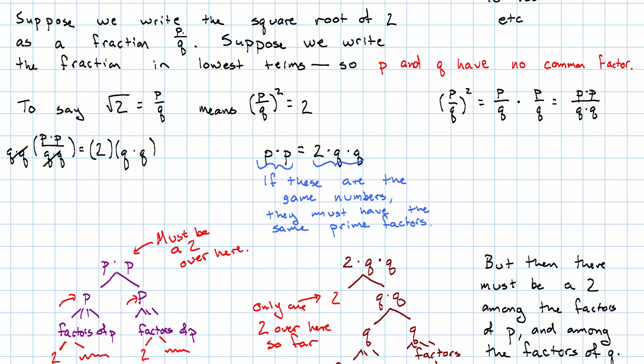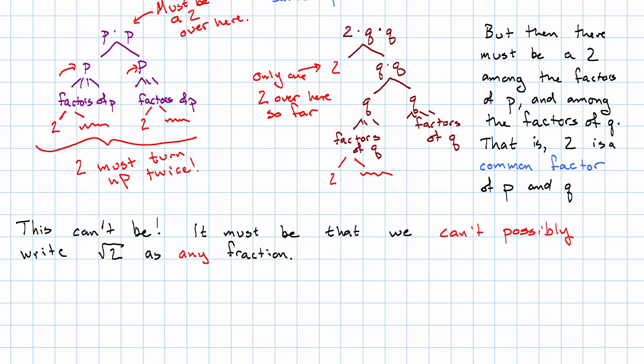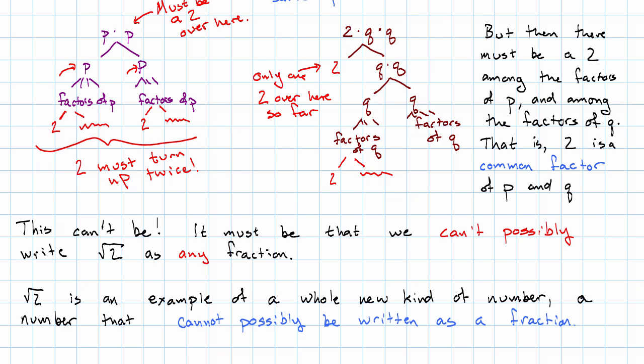But we assumed that p over q was written in lowest terms, so p and q didn't have any factors in common. So this can't possibly be the case. It must be that we can't possibly write the square root of 2 as any fraction, which means the square root of 2 is a whole new kind of number, a number that cannot possibly be written as a fraction.